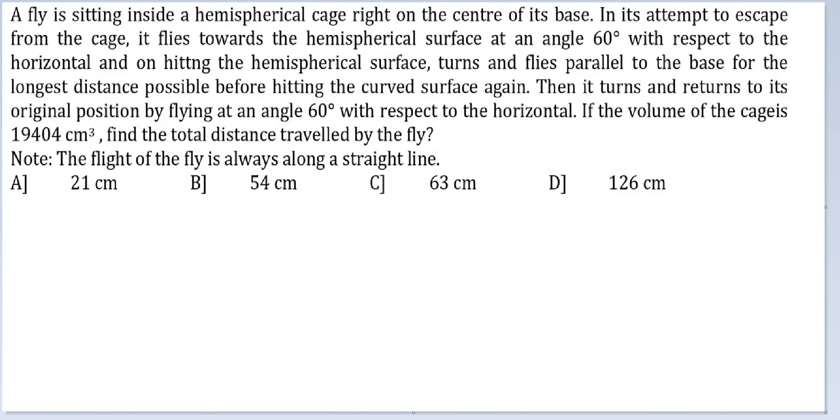Let's look at this question. A fly is sitting inside a hemispherical cage right on the center of its base. In its attempt to escape from the cage, it flies towards the hemispherical surface at an angle of 60 degrees with respect to the horizontal. And on hitting the hemispherical surface, it turns and flies parallel to the base for the longest distance possible before hitting the curved surface again. Then it turns and returns to the original position by flying at an angle 60 degrees with respect to the horizontal.